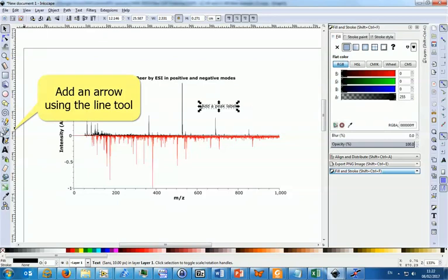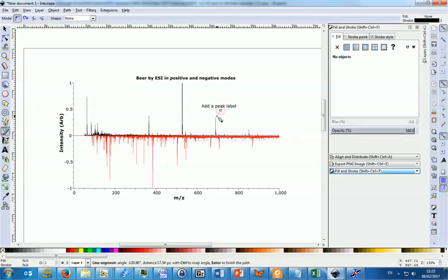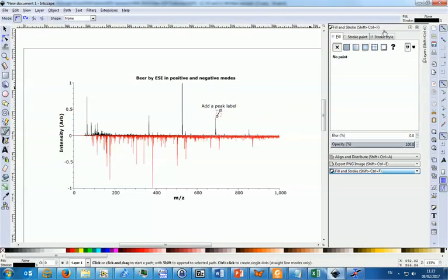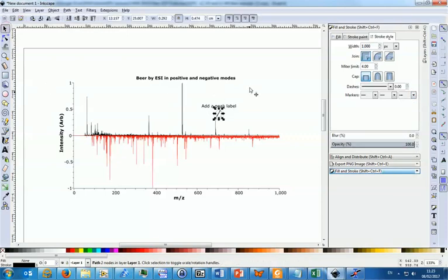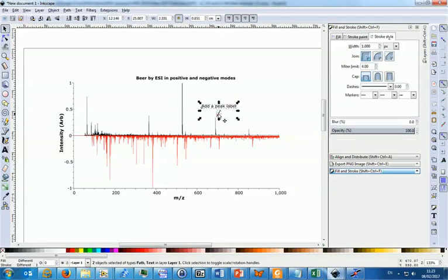Now we can also add an arrow to make sure the label points to the specific peak that's been assigned. Make as many labels and arrows as you need to label all the assigned peaks in your spectra.